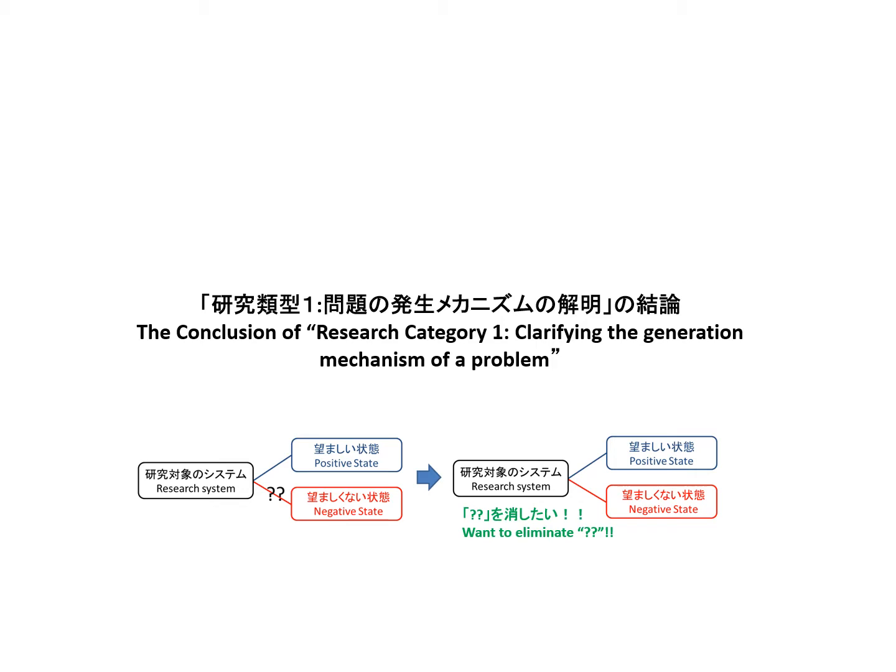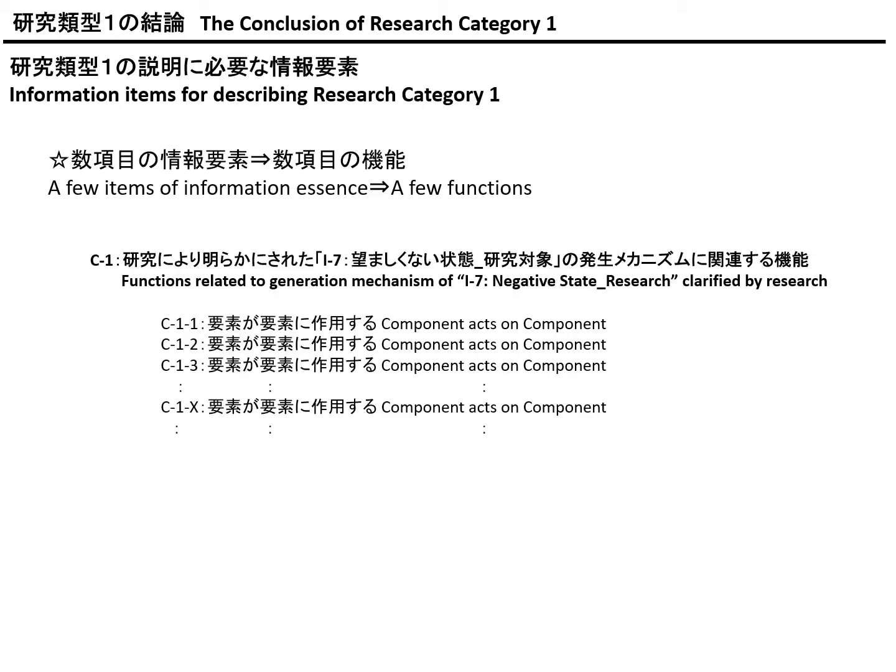I'm going to talk about the conclusion of Research Category 1, clarifying the generation mechanism of a problem. If you are working on Research Category 1, the thing which you can conclude with respect to the results of your research activity — which could be described using the template I have explained already — must be a few items of information essence.